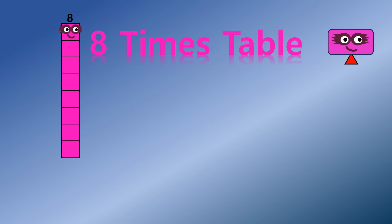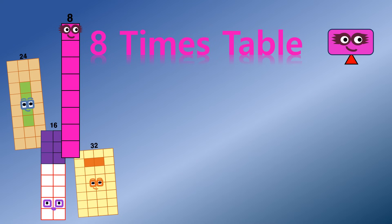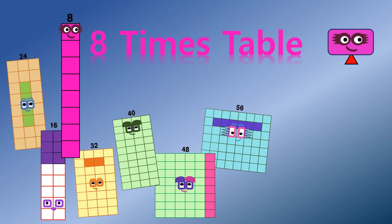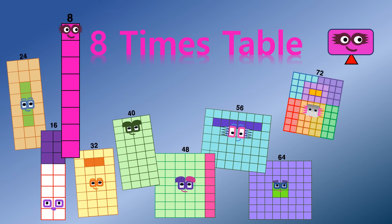One 8 is 8. Two 8 are 16. Three 8 are 24. Four 8 are 32. Five 8 are 40. Six 8 are 48. Seven 8 are 56. Eight 8 are 64. Nine 8 are 72. Ten 8 are 80.